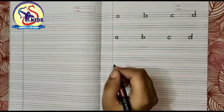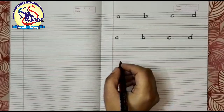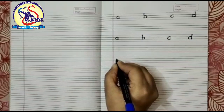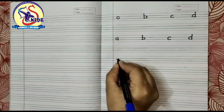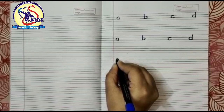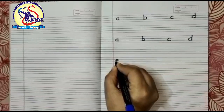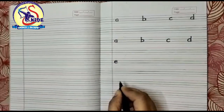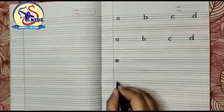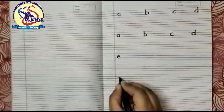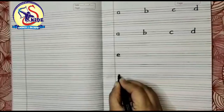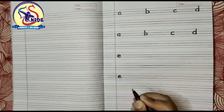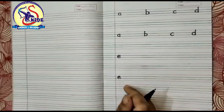Now small e. Start below the middle, making a loop and continue to make a curve to reach the bottom. Again start below the middle, making a loop and continue to make a curve to reach to the bottom. This is small e.